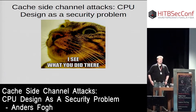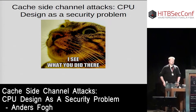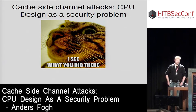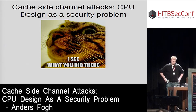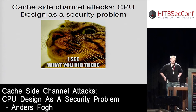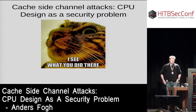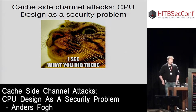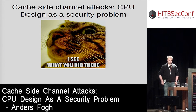The subject of this talk is cache side-channel attacks as an example of how CPU design can become a security problem. About a year ago, I was preparing a talk about how to detect the Rowhammer exploit, and one guy on Twitter tweeted that he could do it in JavaScript, which threw my plans to the wind. I had to figure out how he did it, and everything looked like it was going to be something to do with the cache, so I started reading up on cache side-channel attacks.